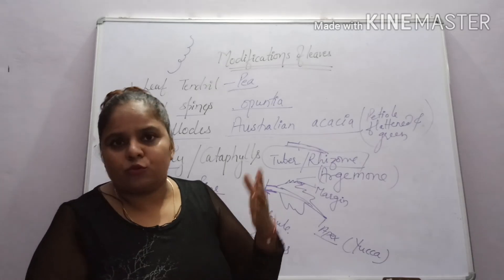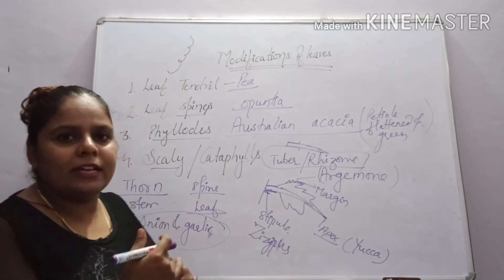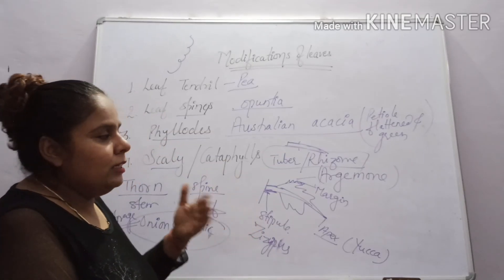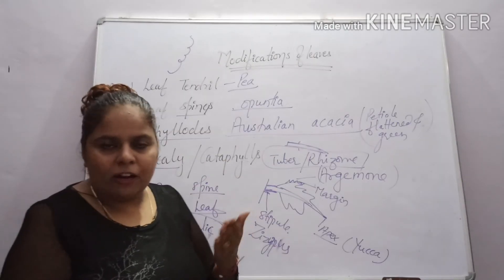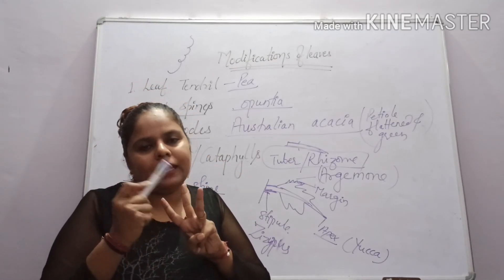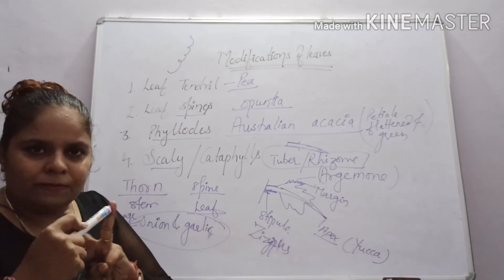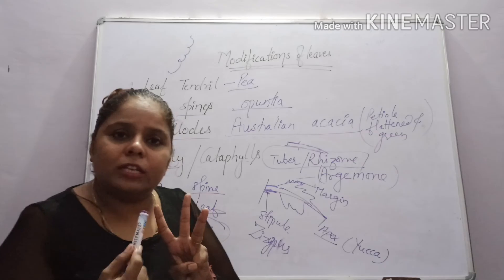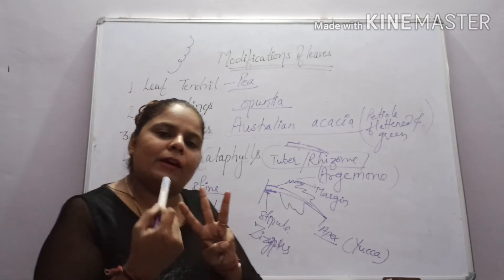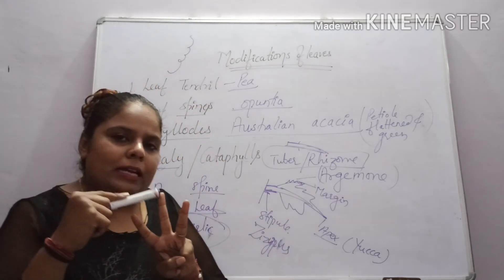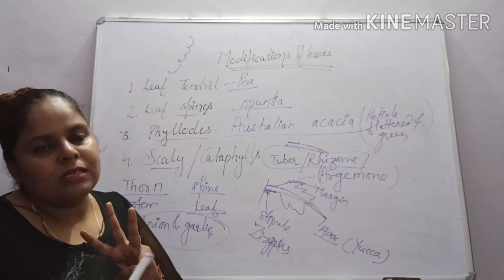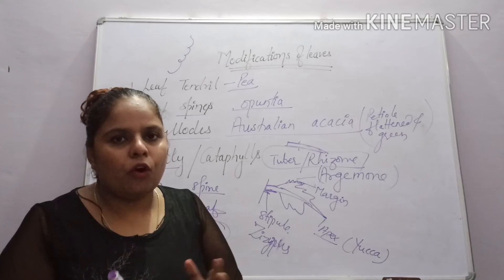Now the leaflet arrangement is phyllotaxy. So phyllotaxy is the arrangement of leaflets on the axis. One is opposite, alternate, and whorled. If leaflet is opposite on axis, then it is opposite phyllotaxy. If it is alternate, then it is alternate. And if it is more than two leaves, then it is whorled.